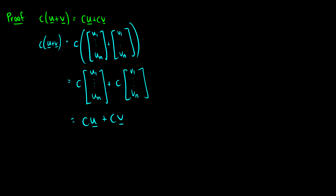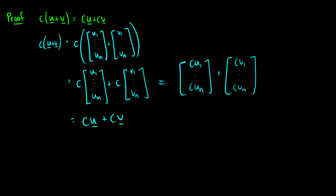We have shown that this equals c times u plus c times v. You could go one step further and say this equals the vector cu1 through cun, plus cv1 through cvn, but that's not necessary. So there's a proof that scalar distribution works — those are two proofs right there.